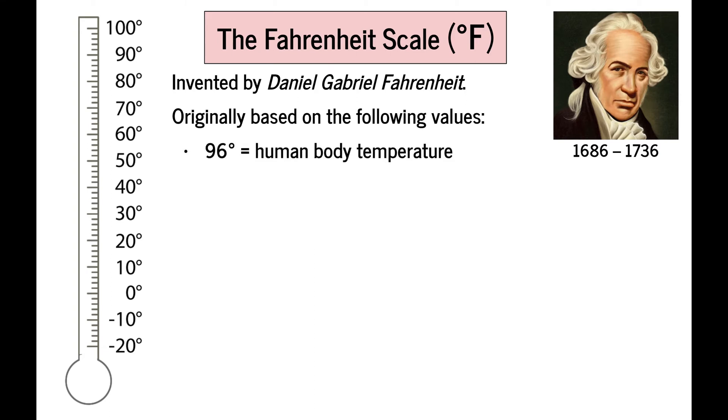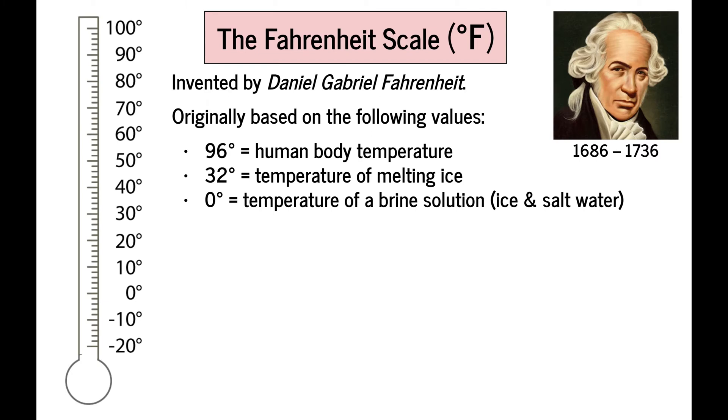The scale was originally based on a few important values, which Fahrenheit measured himself. His estimate for the human body temperature was about 96 degrees, which is a little bit off from what we know it to be today, but it was a fairly accurate guess for his time. 32 degrees he marked as the temperature of melting ice, and zero degrees, he said, was the temperature of a brine solution that he had made in his laboratory, which is like a mixture of ice, salt, and water.